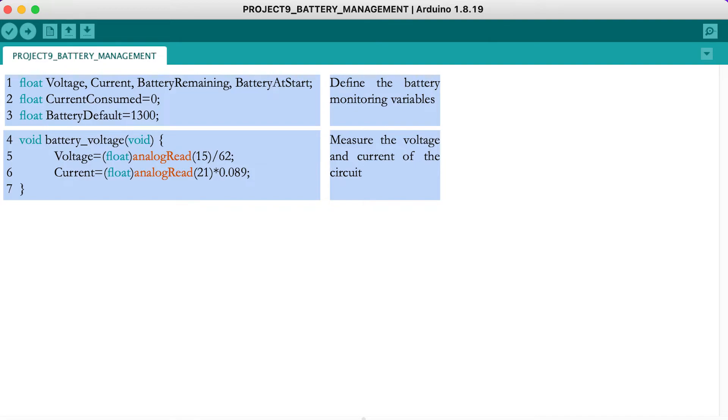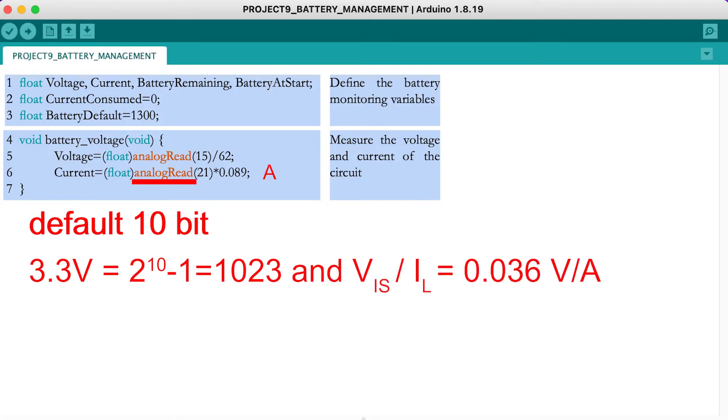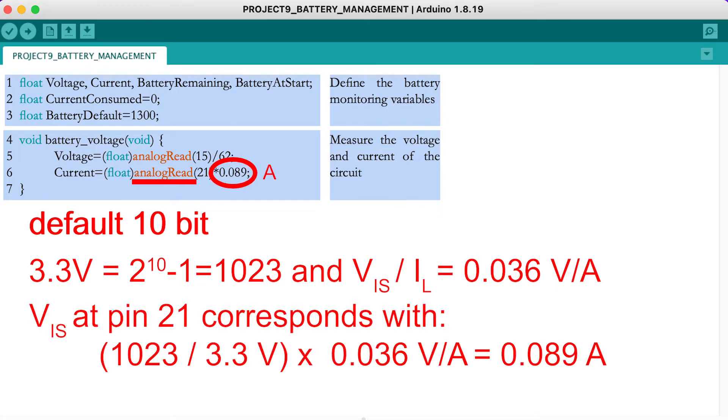Now, you will measure the current as well. Remember that the default resolution for analog read is equal to 10 bits. A voltage of 3.3 volts thus corresponds with the digital number 1023. Moreover, you know that 1 volt at Teensy pin 21 corresponds with the load current multiplied by 0.036. This means that the current flowing through the power switch is equal to the measured digital number at pin 21 multiplied by 0.089.